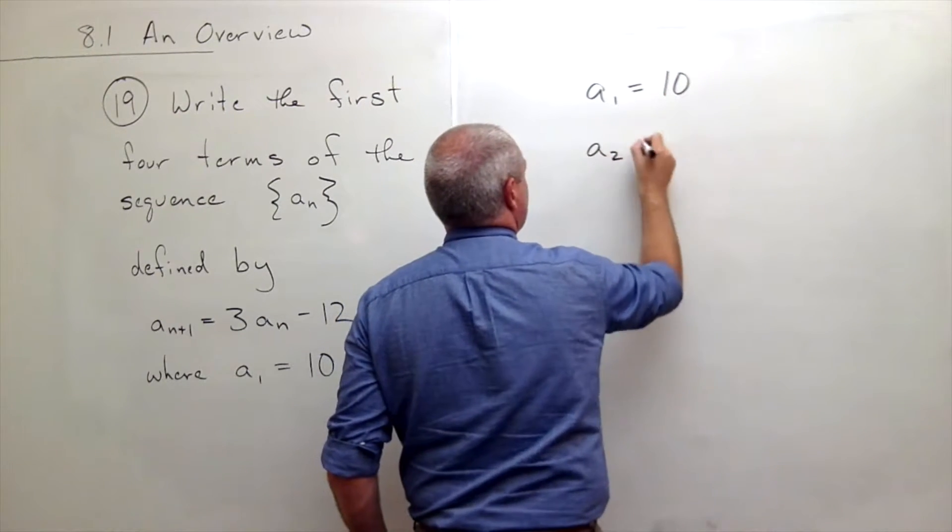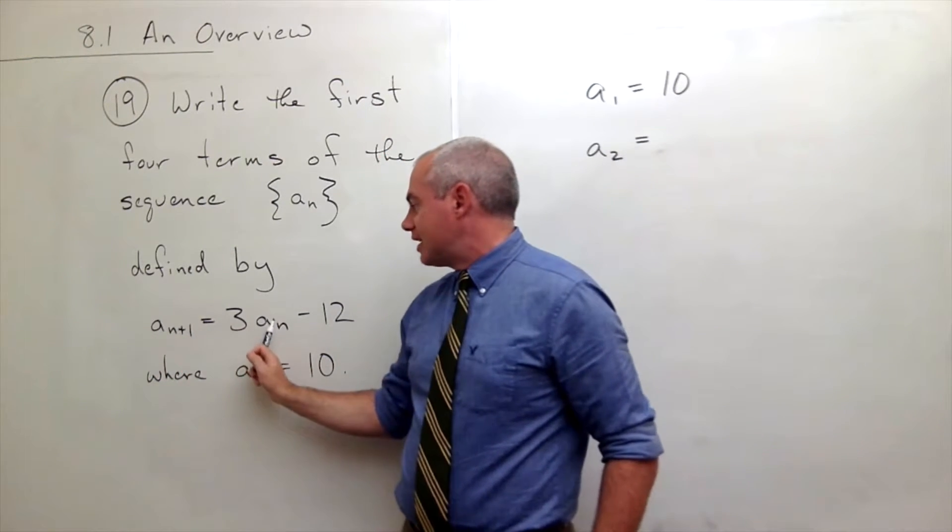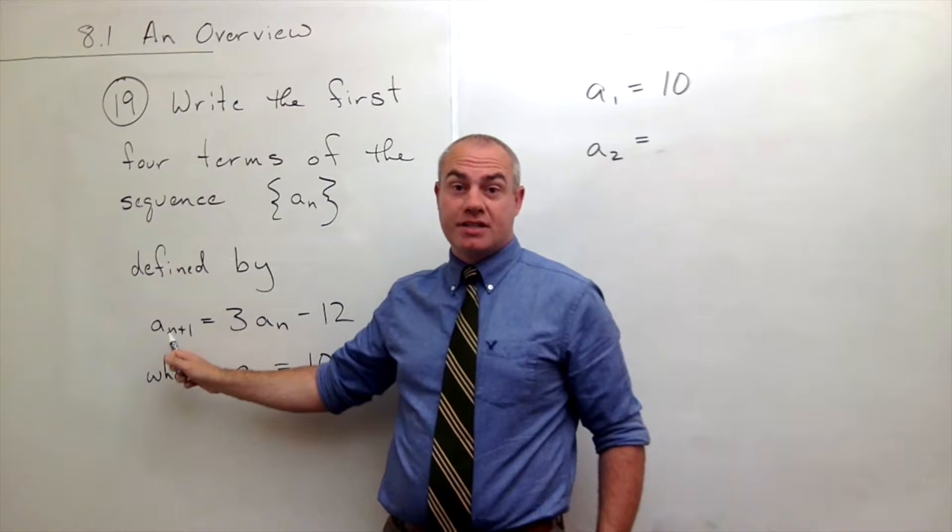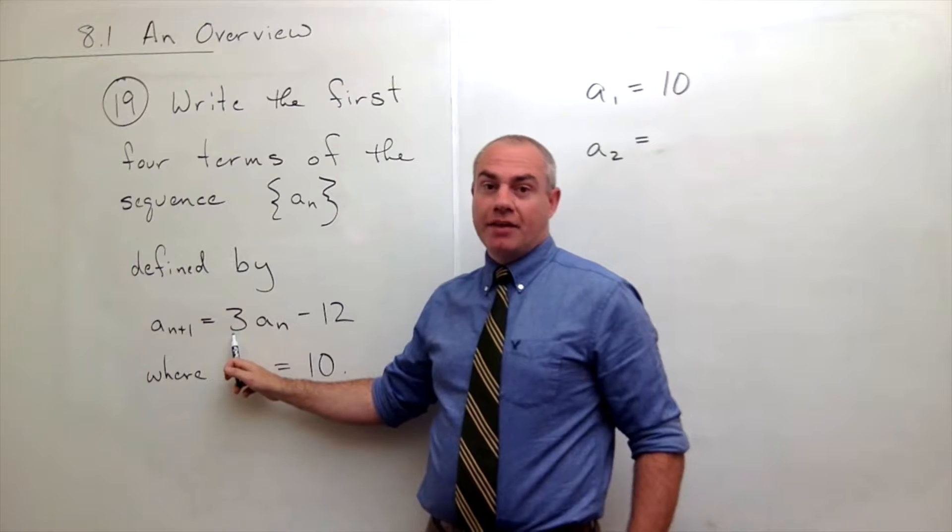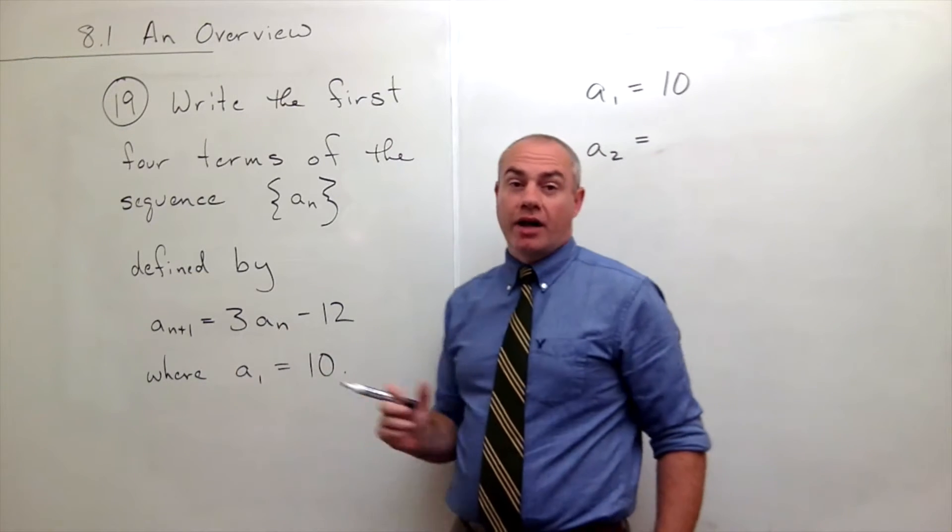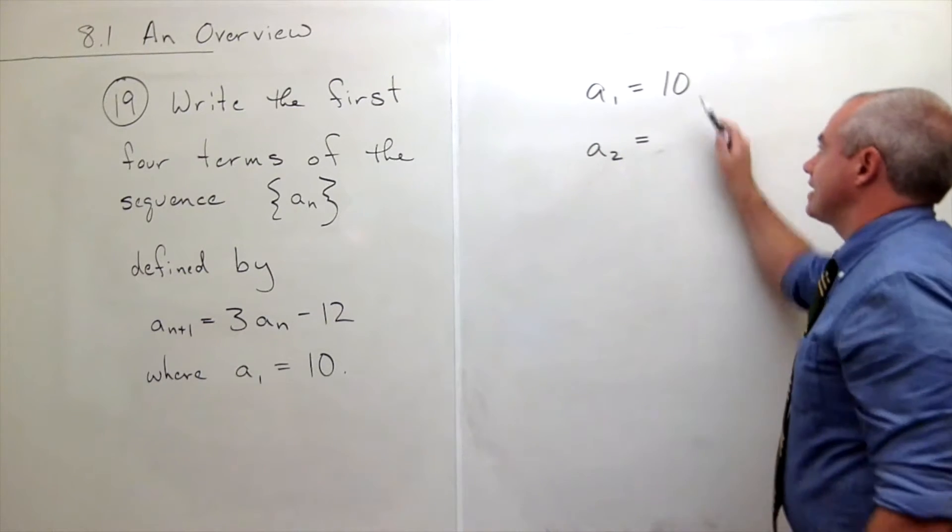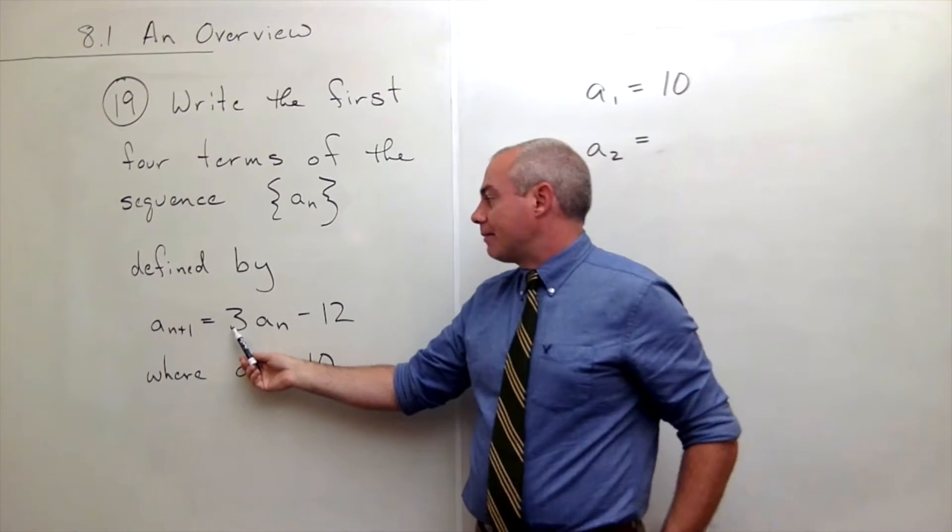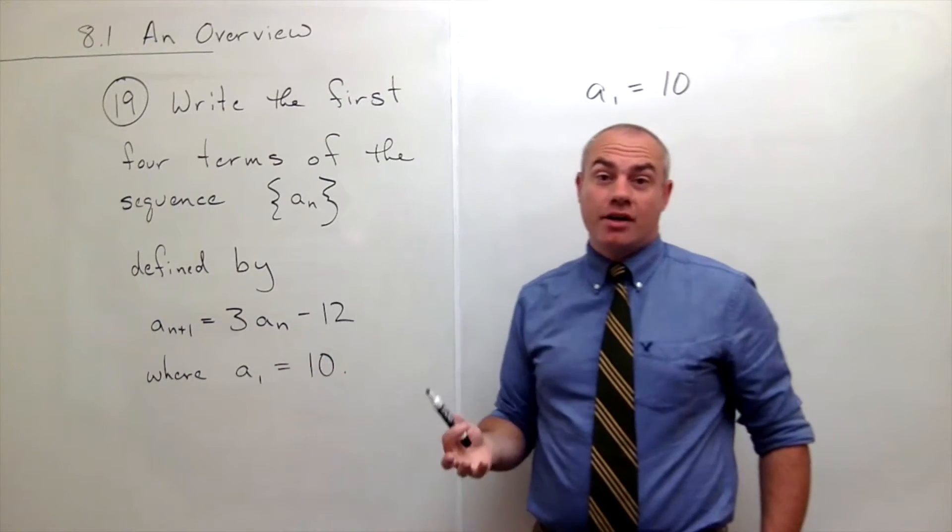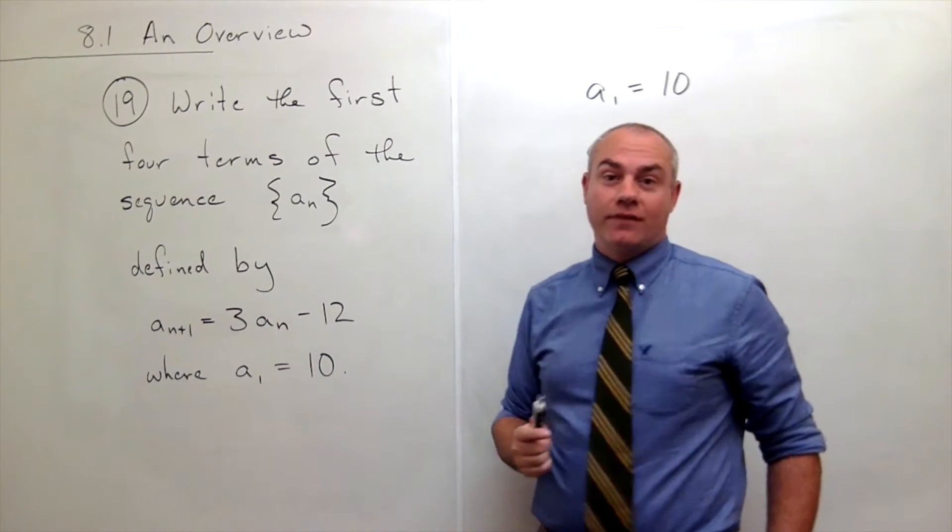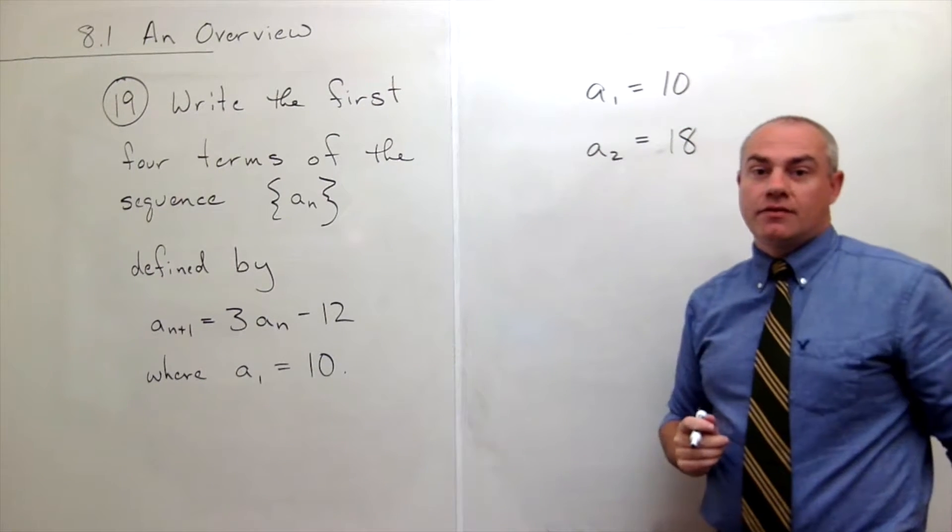So the question is what is a₂? Well, this tells me that if I want to get the next term in the sequence then I take the previous term, multiply it by 3 and subtract 12. So if I want to know what a sub 2 is, I take 10, multiply it by 3 and subtract 12. Well 10 times 3 is 30, subtract 12 is 18 and so we get 18 for a₂.